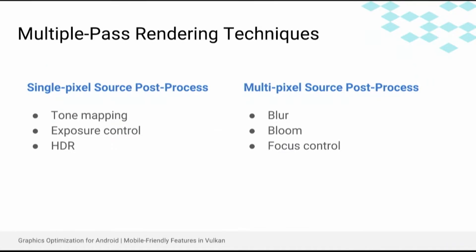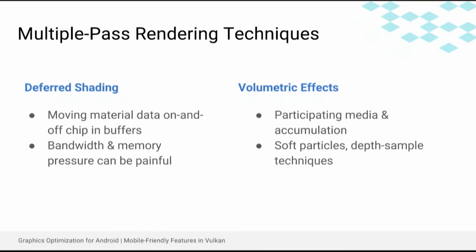This gets interesting when it intersects with multiple pass rendering techniques. These are used for a lot of things, one of the most obvious being post-processing effects. There's stuff like tone mapping, exposure control, and HDR that essentially act as color filters. You render your scene in one pass, and then in a subsequent pass, you apply a filter to it, using one pixel from the previous pass to determine the output for the current pass. There are also post-processing effects which use multiple pixels — like blur, bloom, and focus control — that need information about neighboring pixels. There's also deferred shading where you're rendering a lot of material data out into buffers and then using that to render your scene in another pass.